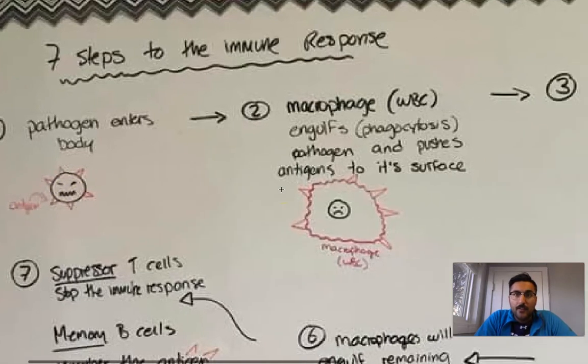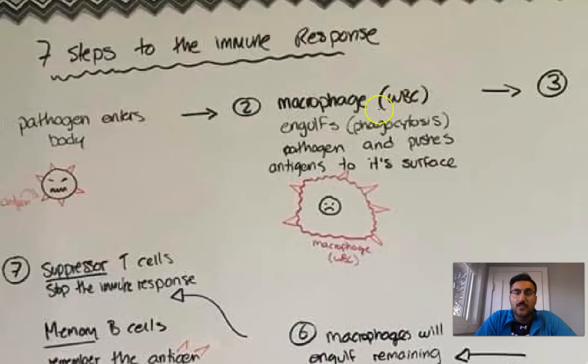Step two, the macrophage, which is a type of white blood cell that we just discussed, is going to engulf, or through that phagocytosis process, that big bear hug, it's going to engulf the pathogen and it's going to copy the, take the antigens off of the pathogen, right, those little red triangles that were on the pathogen.